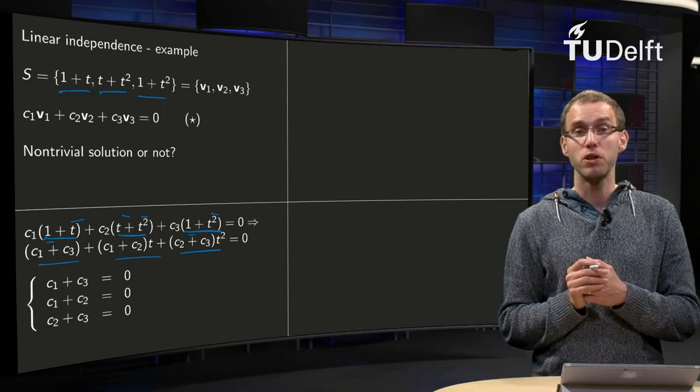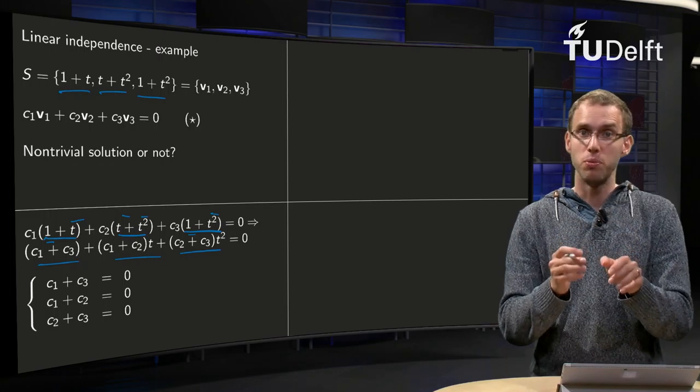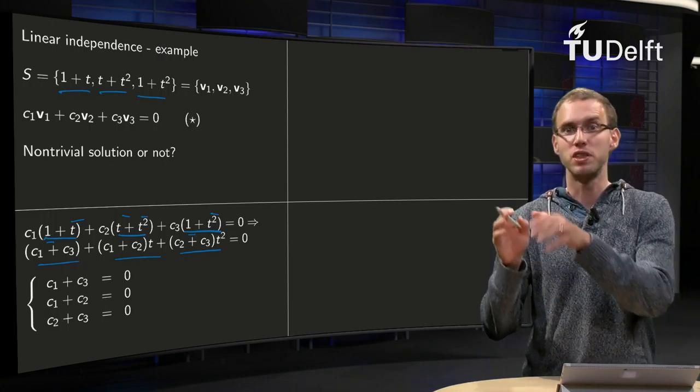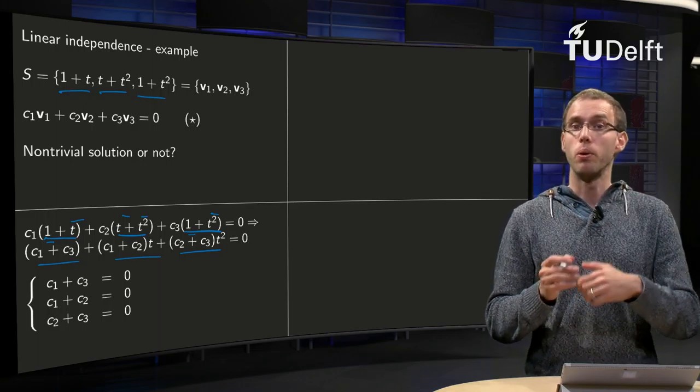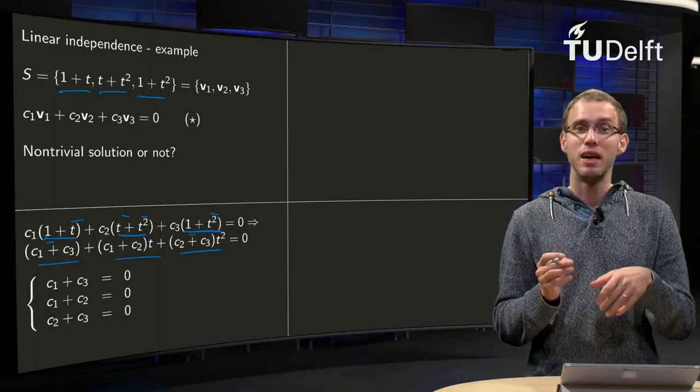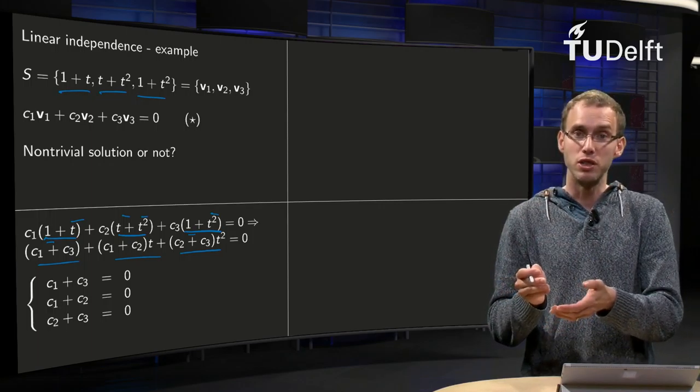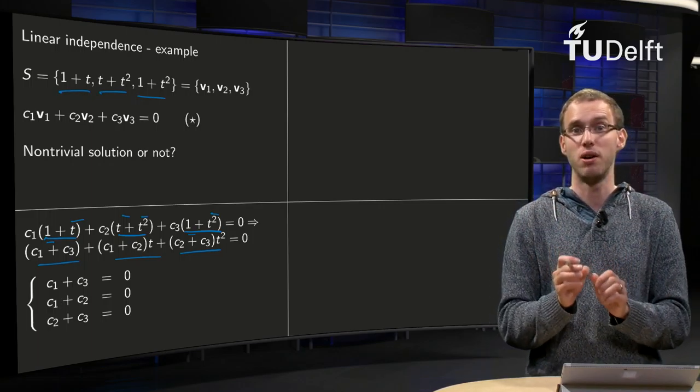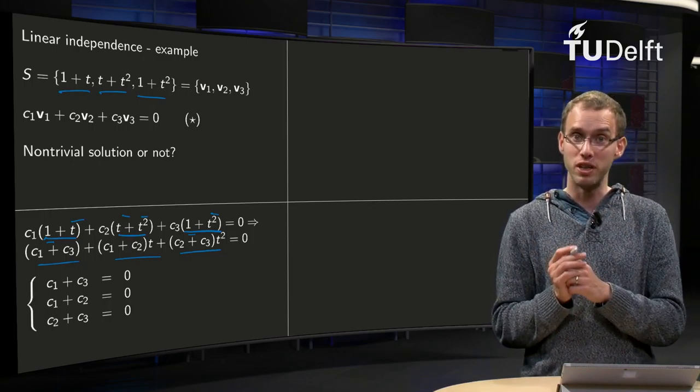And now we have an important step. Now this polynomial, coefficient times 1 plus coefficient times t plus coefficient times t squared, has to be zero for all values of t. You can only achieve that if the coefficients in front of the 1, in front of t, and in front of t squared, if all those coefficients are zero. So those coefficients c1 plus c3, etc., those coefficients all have to be zero.